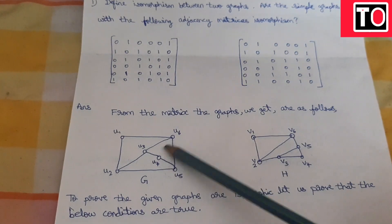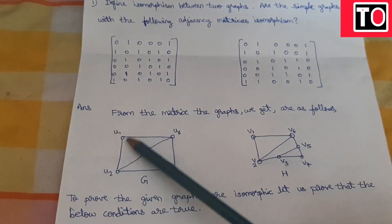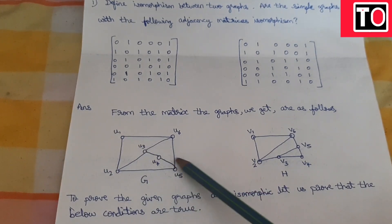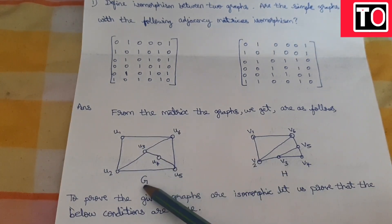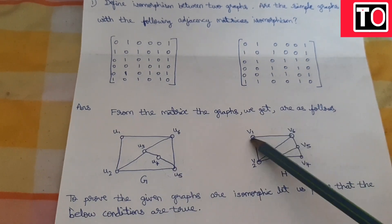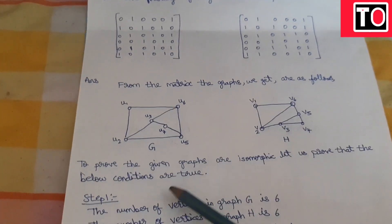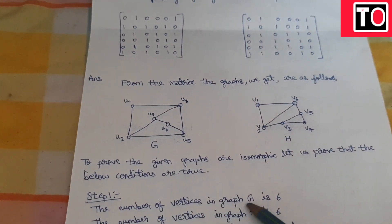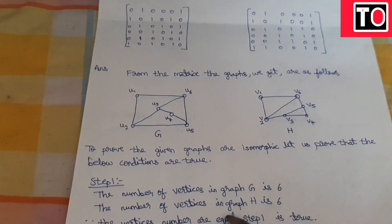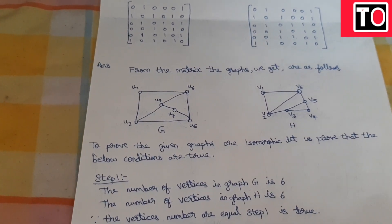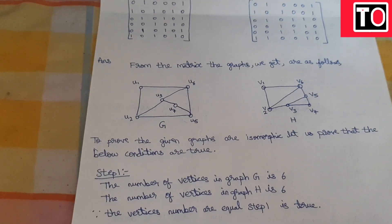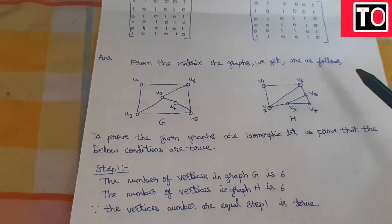Step 1: Number of vertices. The vertices of graph G are U1, U2, U3, U4, U5, U6 — a total of 6 vertices. The vertices of graph H are V1, V2, V3, V4, V5, V6 — also 6 vertices. Since the number of vertices in graph G equals the number in graph H, Step 1 is satisfied.